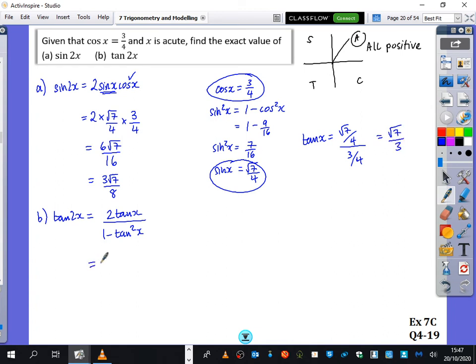Subbing back in here, that's 2 times root 7 over 3, all over 1 minus root 7 over 3, all squared. And then when I get that onto my calculator, that's 2 root 7 over 3, divided by 1 minus root 7 over 3, all squared.